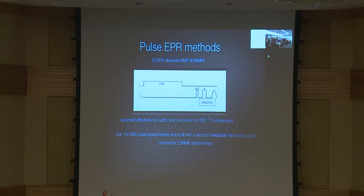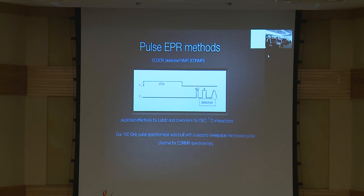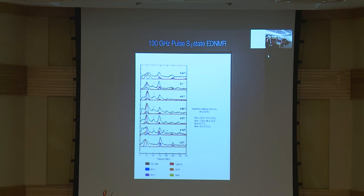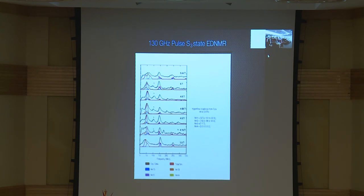Now we can also do ELDOR-detected NMR that Nick and others in Mülheim have so effectively exploited — for the first time because we have multiple frequencies. One frequency makes a high turning angle pulse; we sweep that frequency relative to a second frequency — an electron-electron double resonance experiment — measuring ENDOR transitions in a completely different way using two microwave frequencies and no RF frequency. We get basically the same results that Nick got for S3: two strongly coupled manganese, more weakly coupled manganese, proton peaks moving to higher frequency at higher field. We're happy with this — we're in the game now to do at S3 what we've been doing for many years in S2.